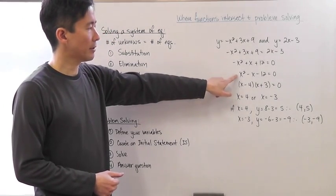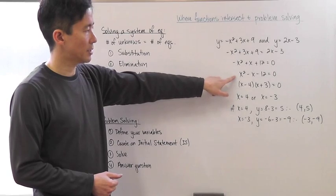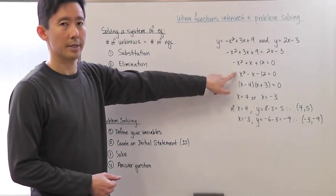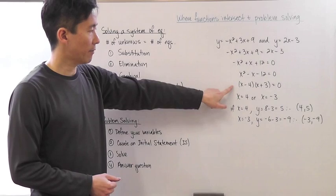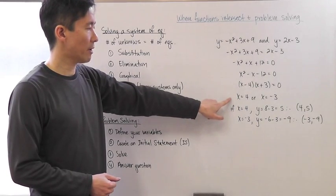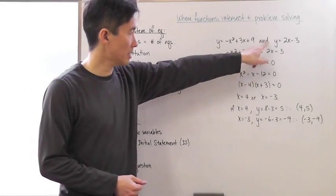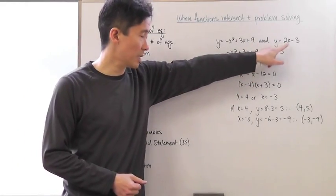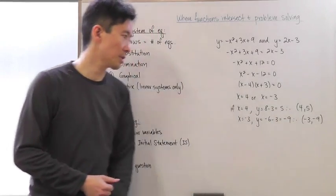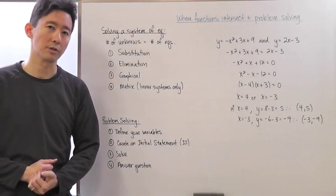When factoring, I always make sure the quadratic term has a positive coefficient. After factoring, I get the x values. Substituting these back into either equation—I use this one because it's easier—I can find the intersection points between the two functions.